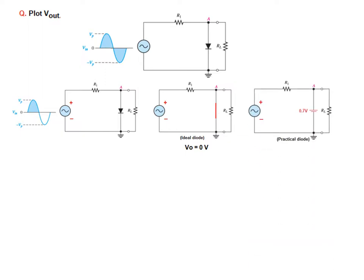Now let's talk about the practical diode. In case of a practical diode, the diode will be replaced by 0.7 volt battery, positive terminal at the top and negative at the bottom.